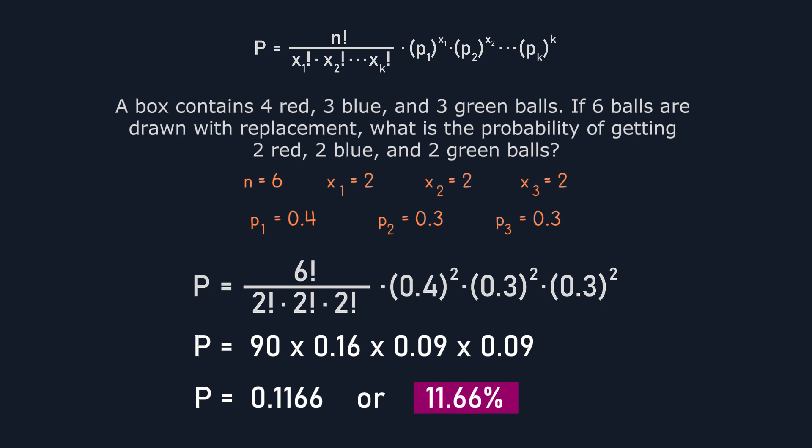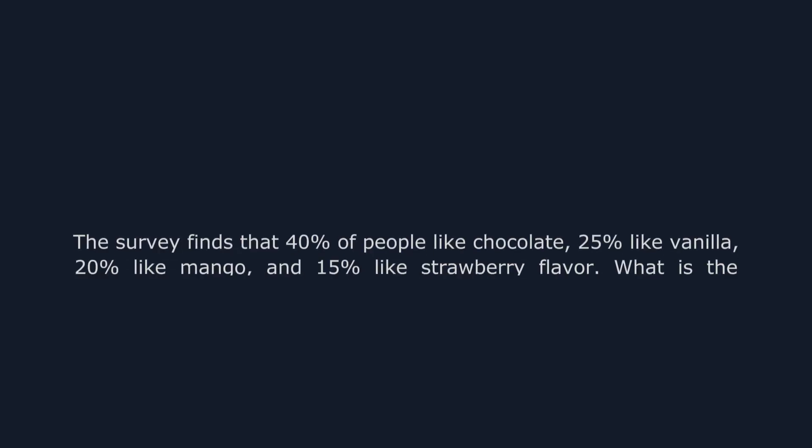All right, what if we answer another problem and we increase the number of combinations? So imagine you're hosting a party, and you've just asked 14 guests about their favorite ice cream flavors. The survey finds that 40% of people like chocolate, 25% like vanilla, 20% like mango, and 15% like strawberry flavor. What is the probability that out of 14 people, 5 like chocolate, 4 like vanilla, 3 like mango, and 2 like strawberry?